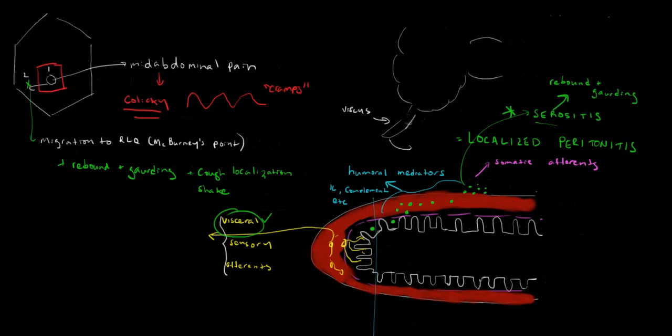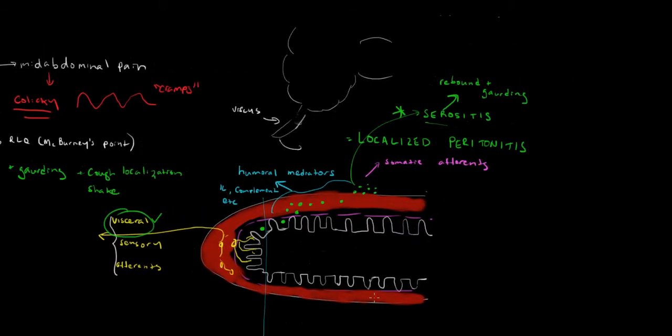The next thing that happens is that the inflammatory process extends beyond the viscera and onto the serosa, which is the outer layer of the appendix that I'm showing here. I'm squaring it off now in red. When the pain goes into the outer layer, this is called a serositis, and it contacts the surface of the peritoneum, and that causes a localized peritonitis, inflammation of the peritoneum.